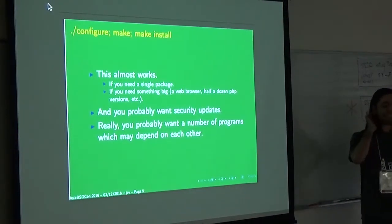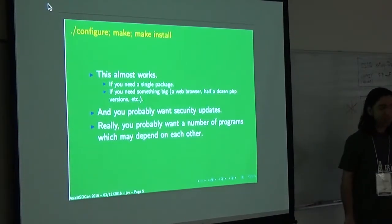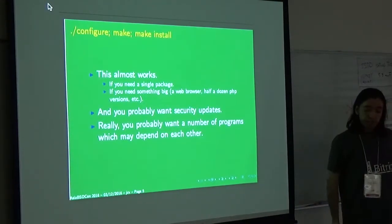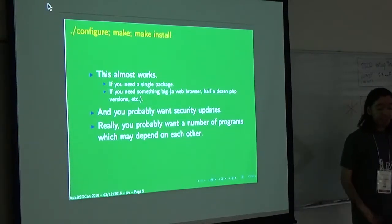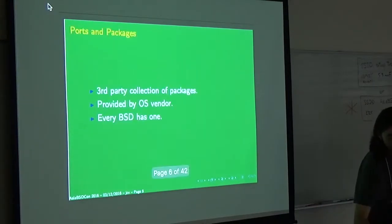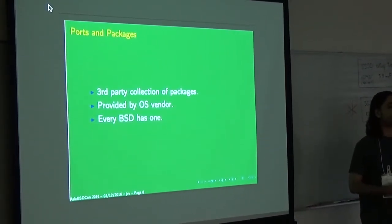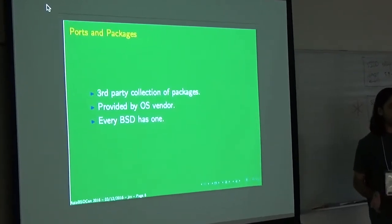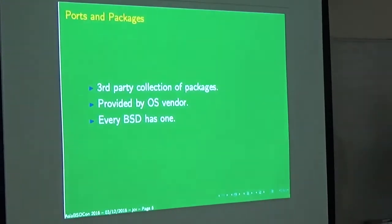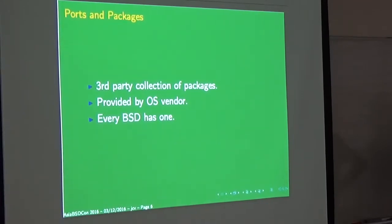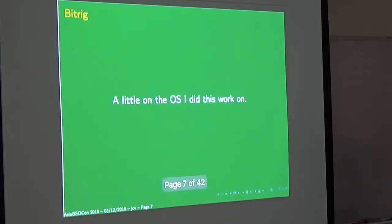Chromium has the same issue. Unless you want to use Links as your web browser, you have a ton of dependencies. Things depend on each other, so you end up with some sort of ports or packaging system. In BSD speak it's usually called ports — that's what BitRig inherited from OpenBSD. Every OS vendor usually provides something, and every system has their own that's a little different but more or less the same thing.